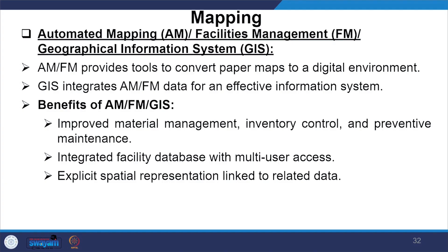Automated Mapping (AM), Facility Management (FM) and Geographical Information System (GIS) work together: AM/FM provide tools to convert paper maps to a digital environment, and GIS integrates those AM/FM data for an effective information system. This enables improved material management, inventory control and preventive maintenance. An integrated facility database with multi-user access and explicit spatial representation linked to related data can be achieved through AM/FM/GIS. Applications include planning, estimation and costing, management reports, design and operational logistics, and maintenance and troubleshooting.